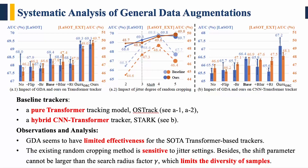As shown in these results, we summarize two main conclusions. First, general data augmentations seem to have limited effectiveness for SOTA transformer-based trackers. Second, if we look at subfigure A2, the existing random cropping method is sensitive to jitter settings. Besides, the shift parameter cannot be larger than the search radius factor, which limits the diversity of samples and also leads to parameter sensitivity.